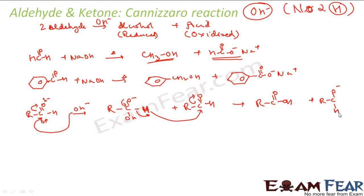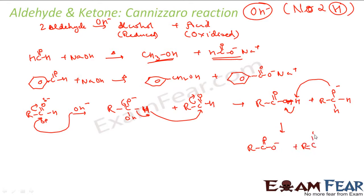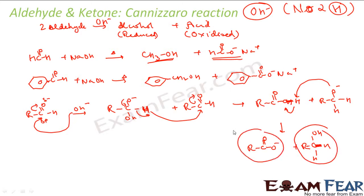The O⁻ attacks the H and breaks that bond, giving R-COO⁻ (carboxylate) and R-CH₂OH (alcohol). This is the self-oxidation and reduction: one aldehyde gets oxidized to carboxylic acid, the other gets reduced to alcohol. This only happens when there is no alpha hydrogen.